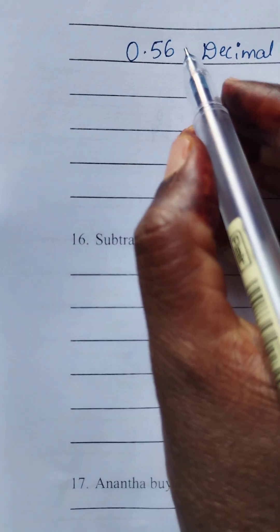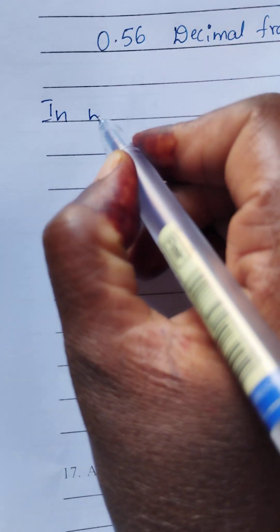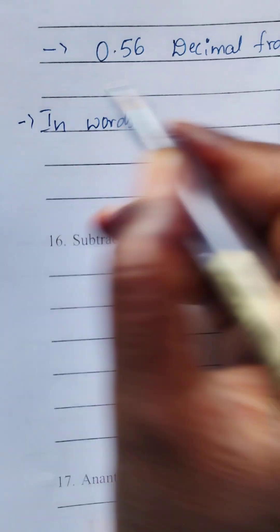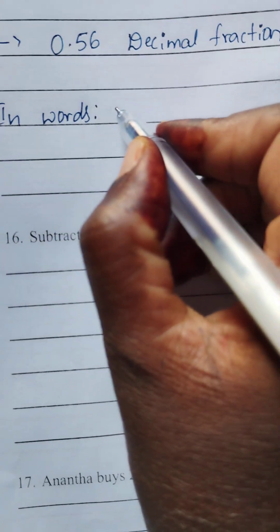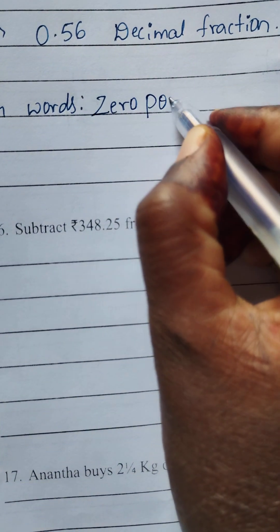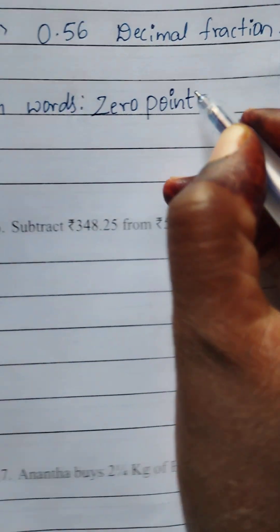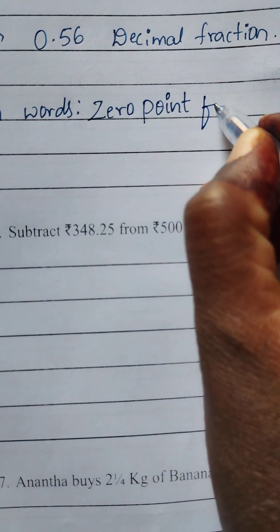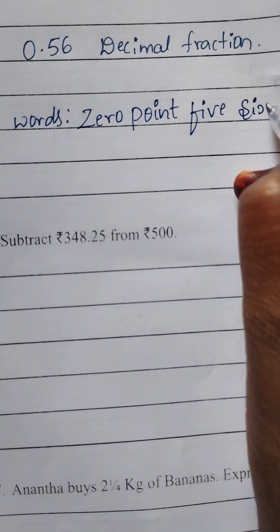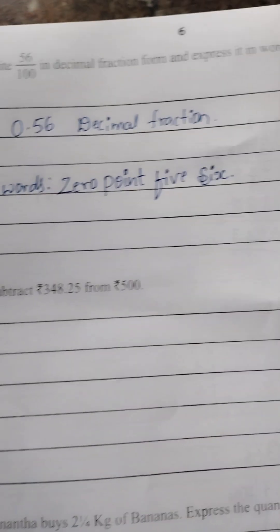Next you need to write this in words also. So this is, in words: zero point five six. So this is the answer.